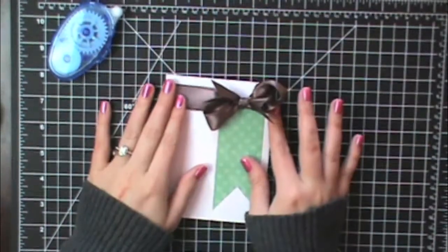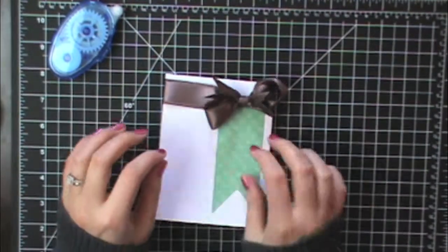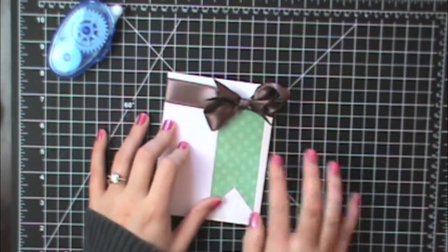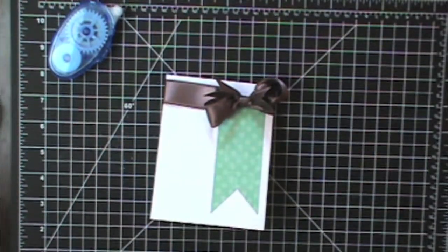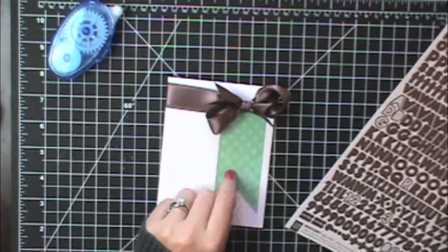If you're worried about that bow moving you can stick some glue dots underneath the bow and that'll hold the ribbon in place. That looks pretty good to me so I've got these little alphabets from Basic Gray. I'm just going to spell out thank you and put it on this banner shape.